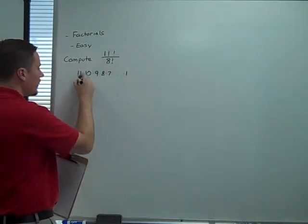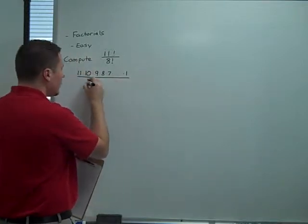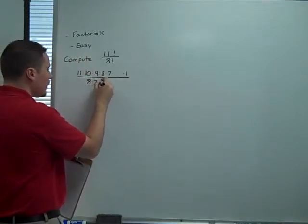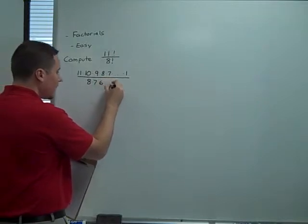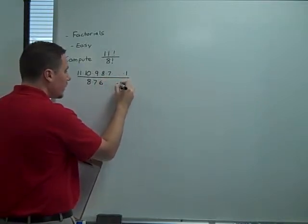There's a bunch of numbers in there. All of this divided by 8 times 7 times 6 times dot dot dot. Again, all the way down to 1.